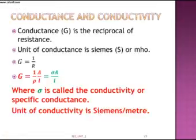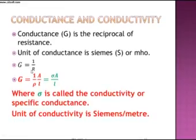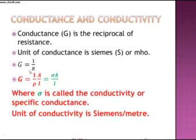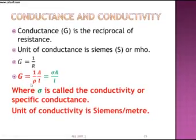The relationship between conductance and resistance is that they are reciprocal in nature. Conductance G is given by 1/R and the unit for conductance is Ohm inverse. So G becomes (1/ρ) × (A/L), and 1/ρ is called sigma, which is the conductivity.